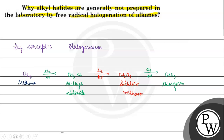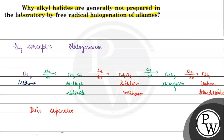These chlorinated compounds — like chloromethane and dichloromethane — are very similar in their physical and chemical properties. Because of this similarity, their separation from one another is very difficult.